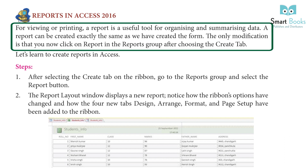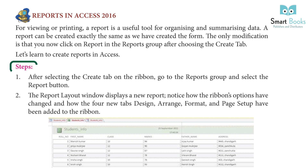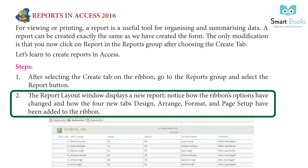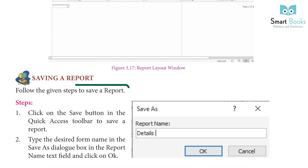A report can be created in exactly the same way as a form. The only modification is that you click on Report in the Reports group after choosing the Create tab. Step 1: after selecting the Create tab on the ribbon, go to the Reports group and select the Report button. A new report layout window displays. Notice how the ribbon's options change and how four new tabs — Design, Arrange, Format, and Page Setup — are added.